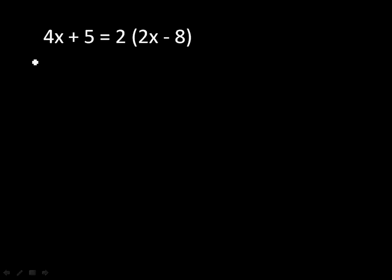As a general rule, what I teach my class is that before you do anything else, you should fully simplify each side of the equation. So on the left-hand side here, there's nothing to do. 4x plus 5 is fully simplified. However, on the right-hand side, I can distribute the 2. So I'm going to go ahead and do that.